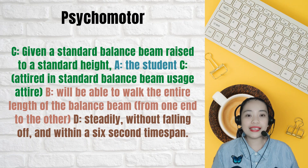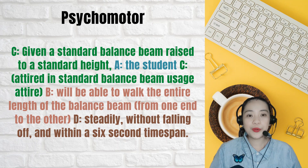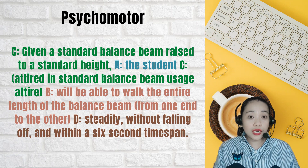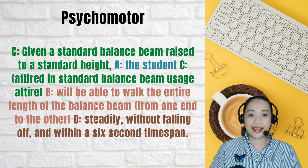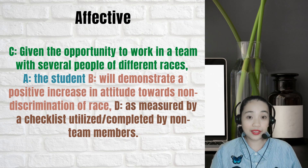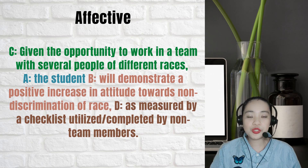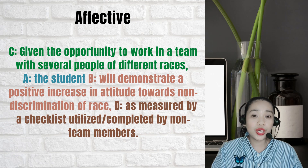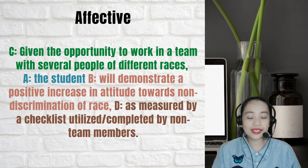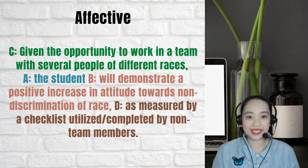Under psychomotor: Condition: given a standard balanced beam raised to a standard height; Actor: the student; Behavior: will be able to walk the entire length of the balanced beam from one end to the other; Degree: steadily without falling off and within a six-second time span. For affective: Condition: given the opportunity to work in a team with several people of different races; Actor: the student; Behavior: will demonstrate a positive increase in attitude towards non-discrimination of race; Degree: as measured by a checklist completed by non-team members.